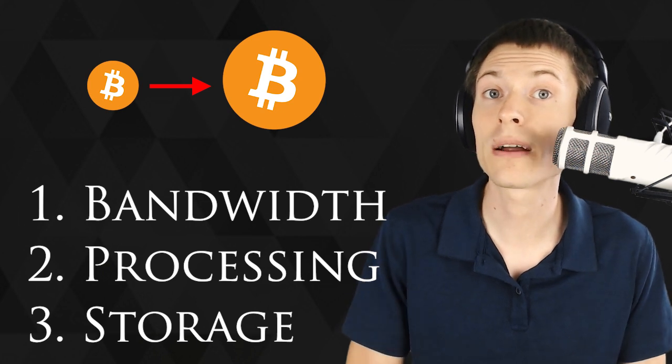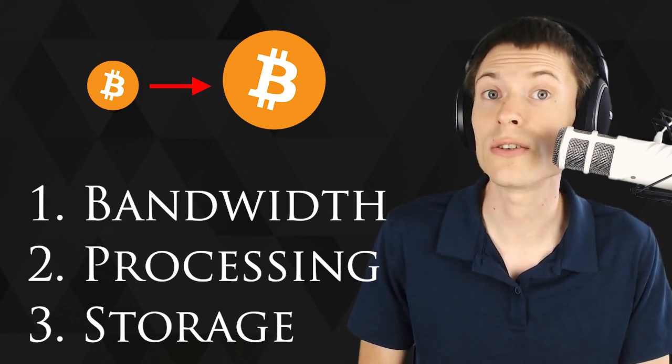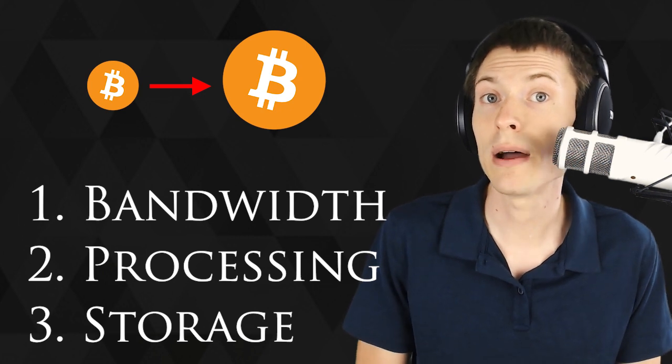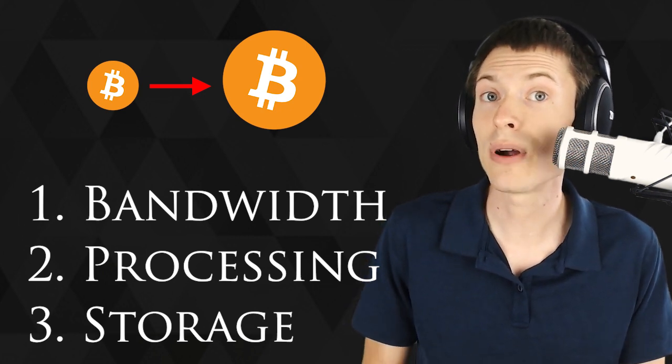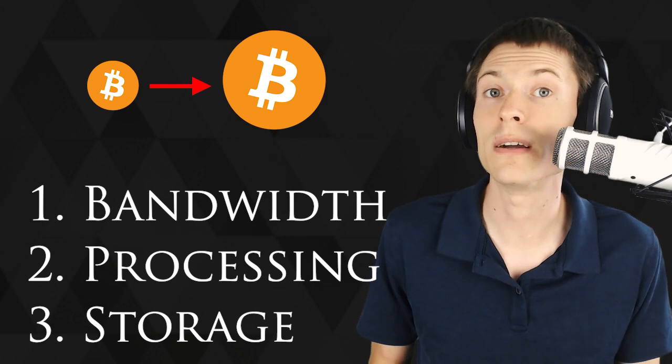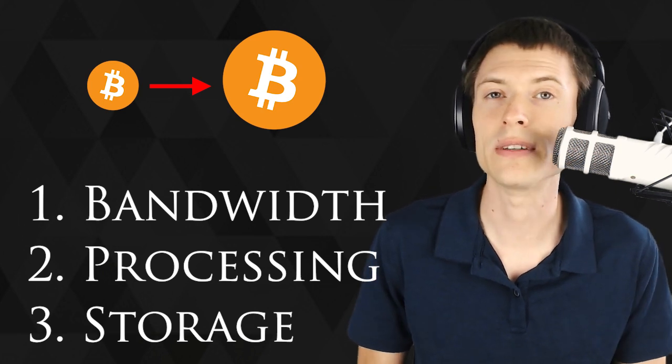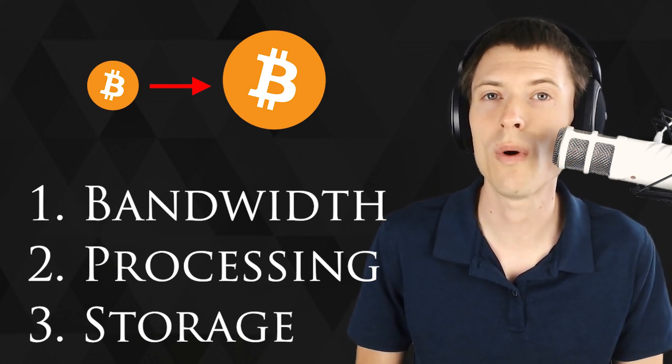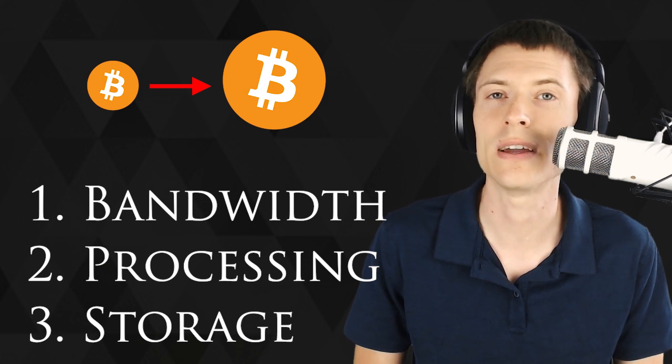Technologies like compact blocks reduce the bandwidth requirement. Schnorr signatures help storage and bandwidth by making signatures smaller, and processing power by allowing signatures to be combined. These three areas - bandwidth, processing, and storage - are what we need to focus on in order to scale Bitcoin.